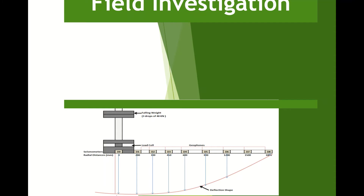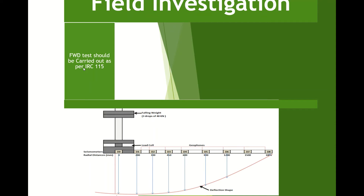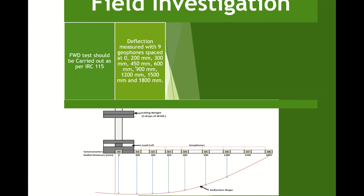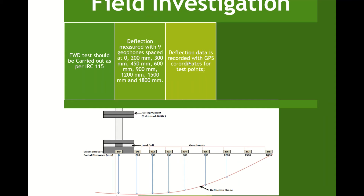For field investigation, the FWD test should be carried out as per IRC 115 — there is a separate code that mentions all details. Deflections are measured with nine geophones — D0, D1, D2, D3, D4, and so on — at intervals of 0, 200, 300, 450, 600, 900, 1200, 1500, and 1800 mm. These are standard values. Deflection data is recorded with GPS coordinates at each test point, directly in the instrument.